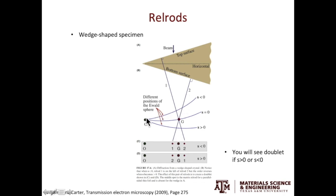If the excitation error is equal to zero, it will cut through the intersection of those two relrods and give you only one diffraction spot. However, if the excitation error is not equal to zero — whether it's positive or negative — it will give rise to two closely spaced diffraction spots called doublets.